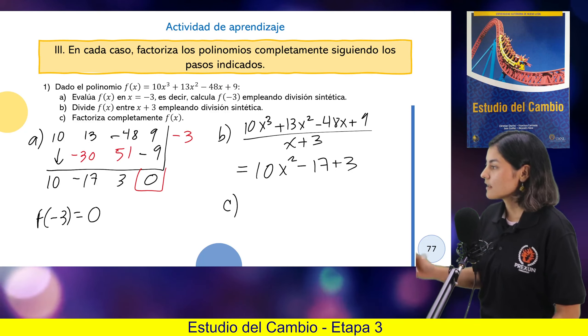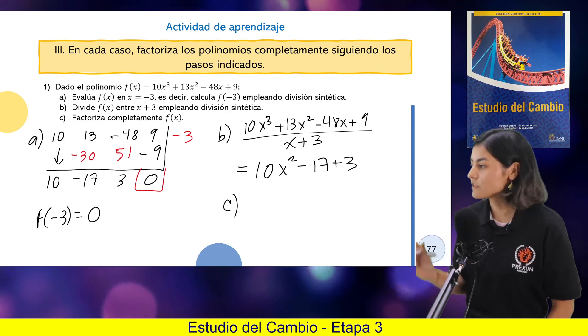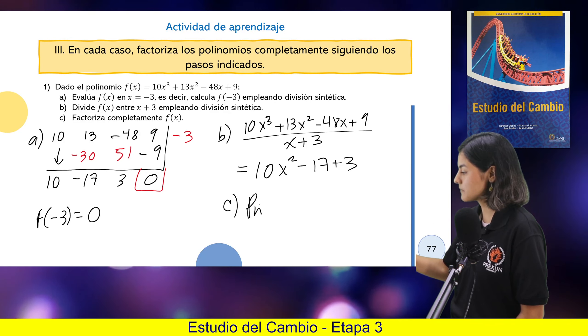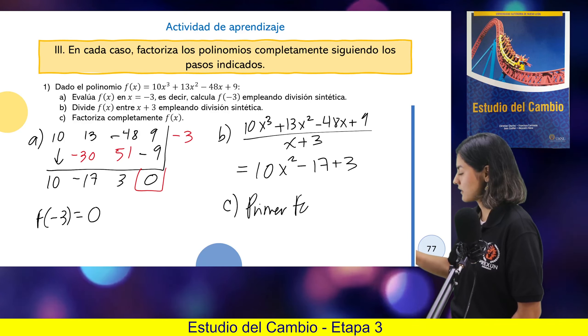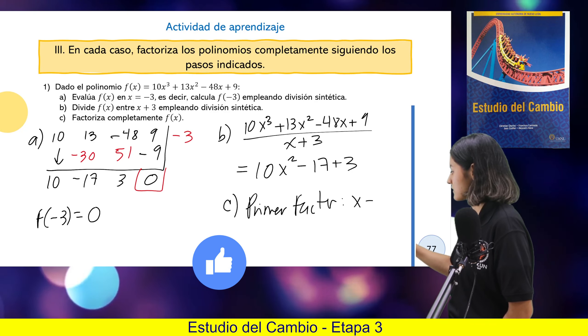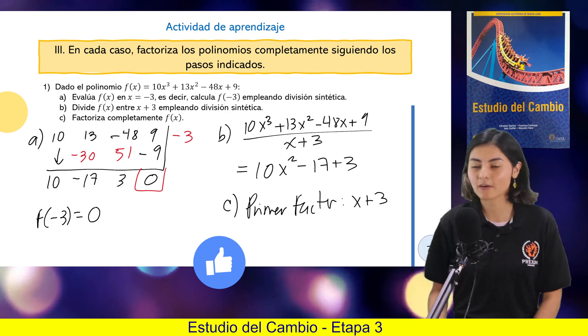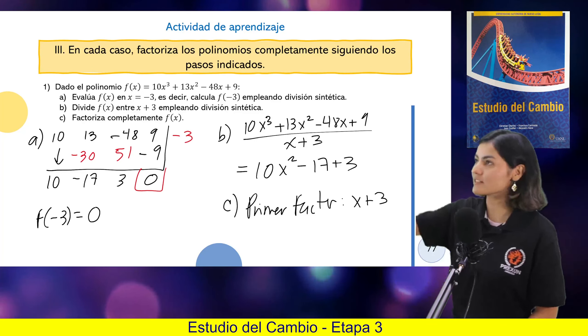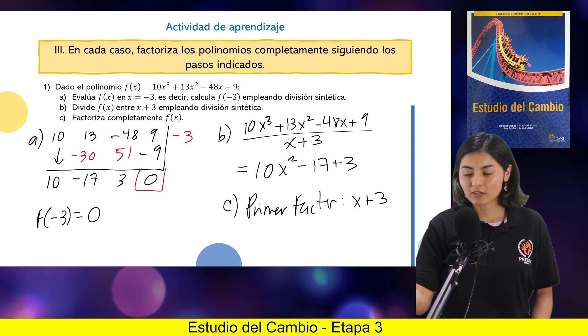Entonces, nos dice, factoriza completamente. Yo ya tengo un factor. Yo sé que mi primer factor es el x más 3, porque ese ya sé que me divide completamente, porque el residuo me da un 0. Entonces, únicamente me va a faltar factorizar lo que me sobró en el cociente.